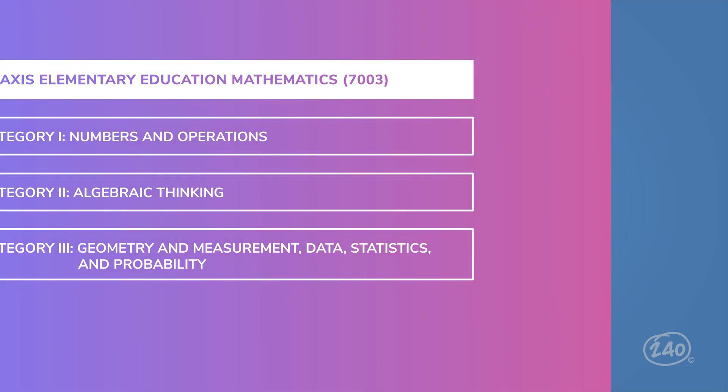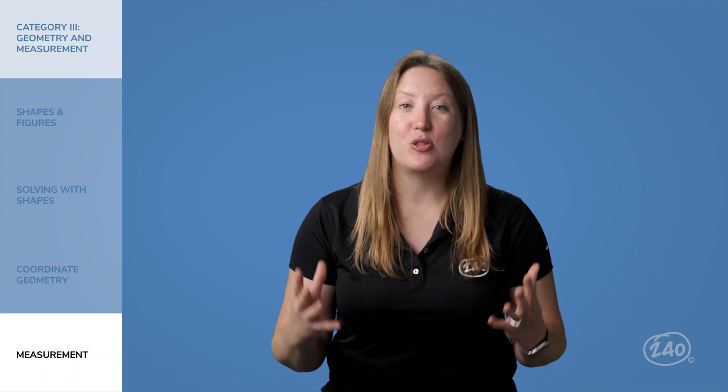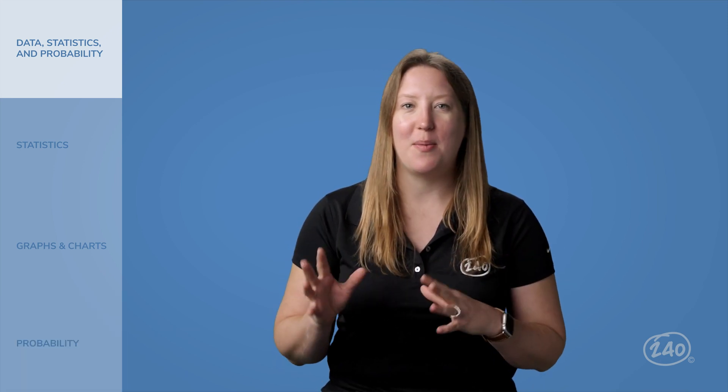One more category to go. The last category is geometry and measurement, data, statistics, and probability. There is a lot packed into it and it will fill out the remaining 30% of your exam questions. In the geometry and measurement section, you're going to need to know properties of 2D shapes and 3D figures, how to solve problems involving shapes, how to represent shapes on the coordinate plane, and how to use tools and units of measurement. You'll also need to know how to use statistics to describe data, show data in graphs and charts, and find probabilities.